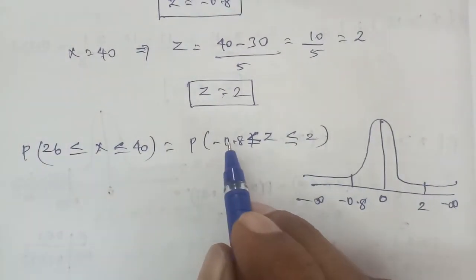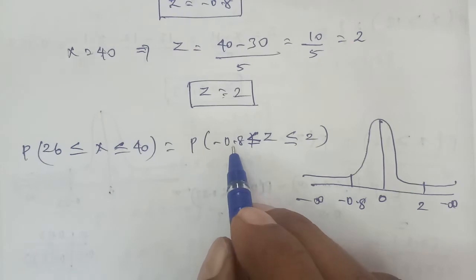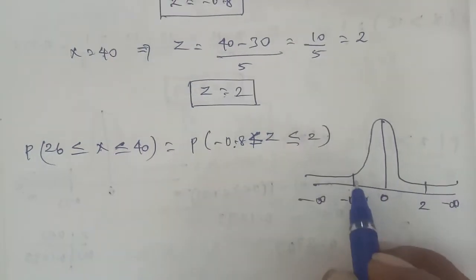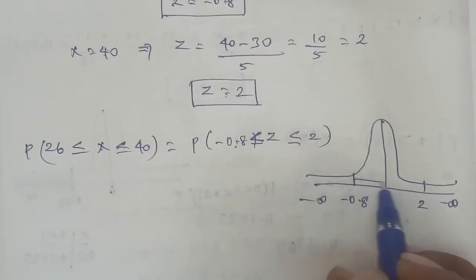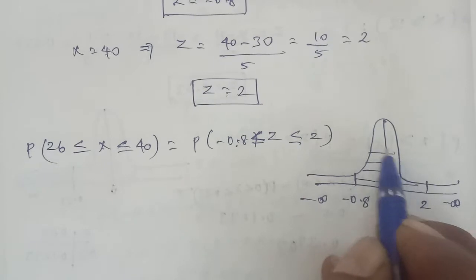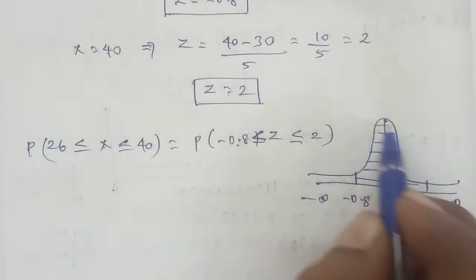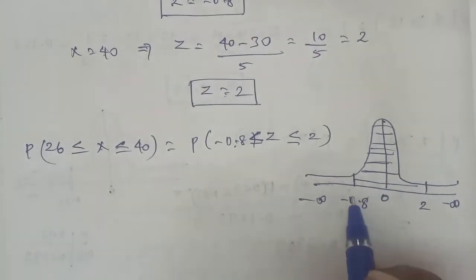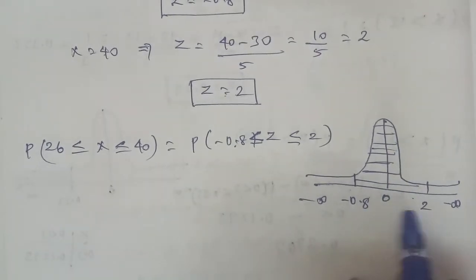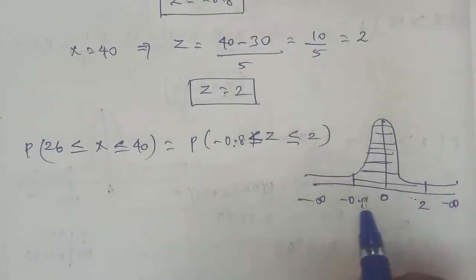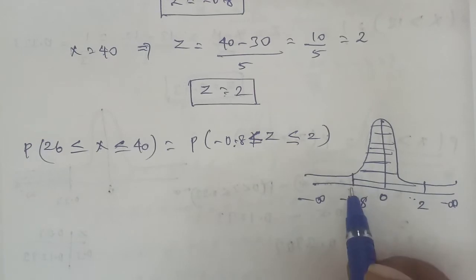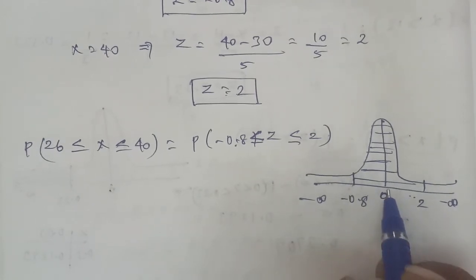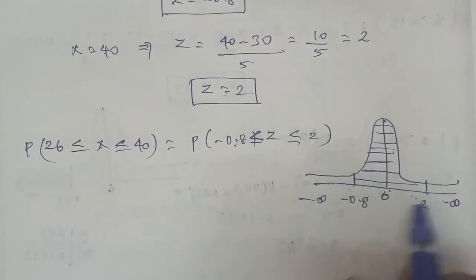The region from minus 0.8 up to 2 is the area under the distribution curve. To find this, we split it into two portions: minus 0.8 to 0 is one portion, and 0 to 2 is the second portion. We add the two answers together.